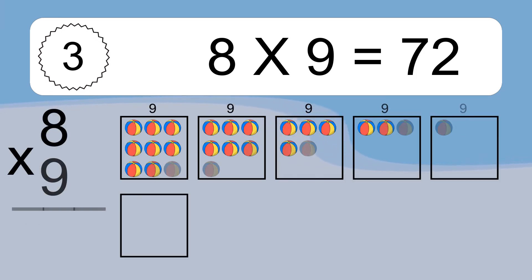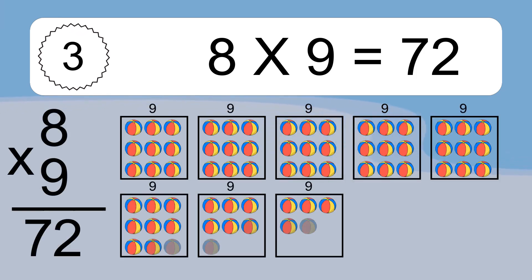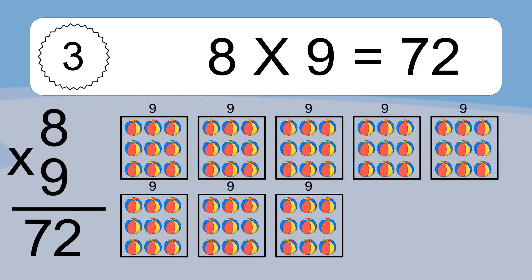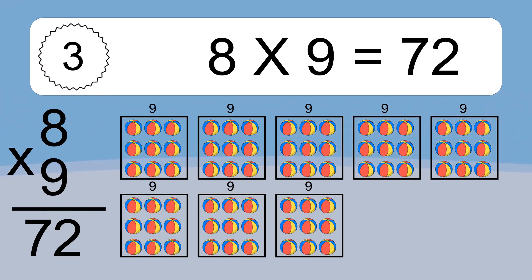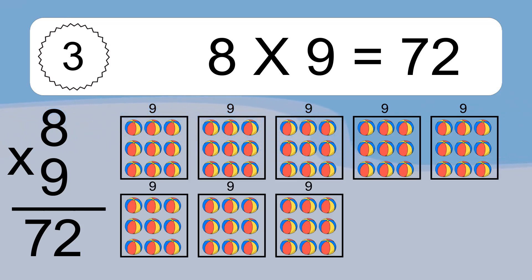Eight times nine equals 72. We have eight boxes and each box has nine colorful balls inside. If you count all the balls in all the boxes together, you will have eight times nine balls. This equals 72 balls.